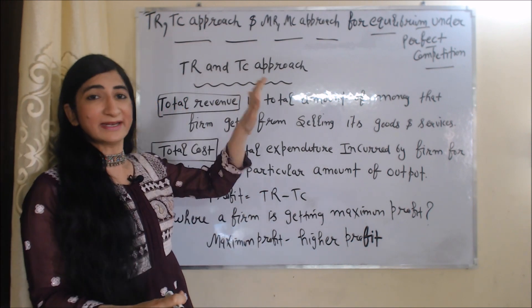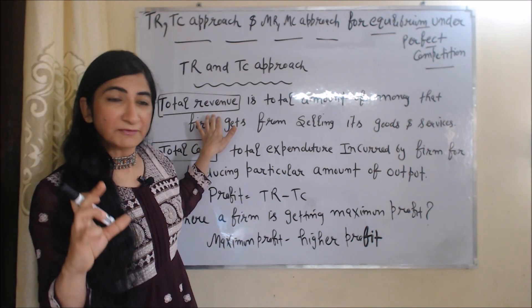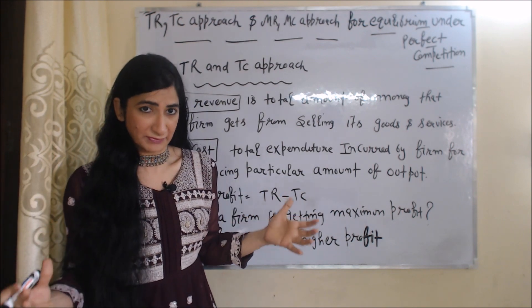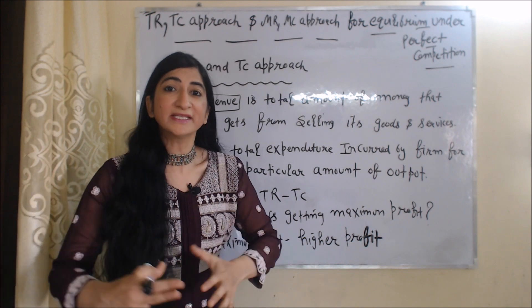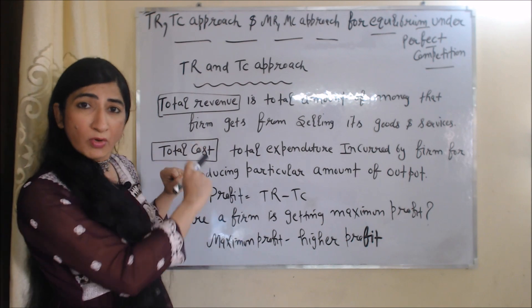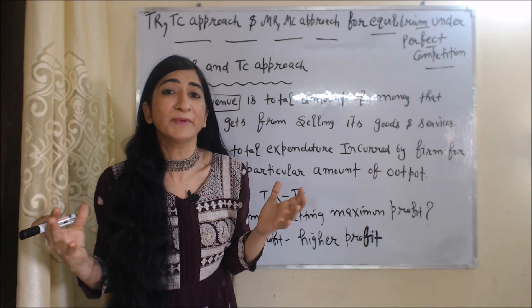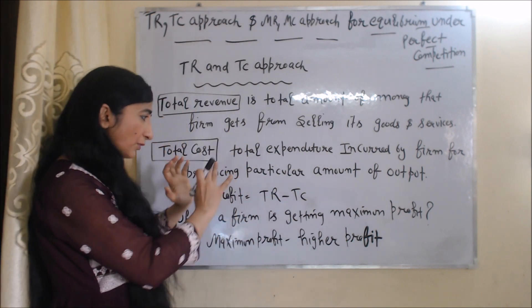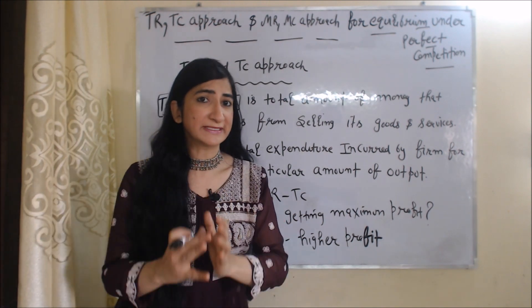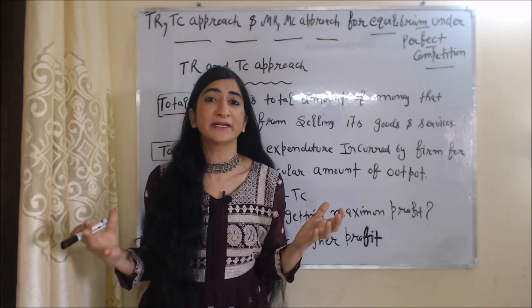Firstly, we are going to talk about TR and TC approach. TR is total revenue — the total amount of money that a firm gets from selling its goods and services. TC is total cost — the total expenditure incurred by a firm for producing a particular amount of output. We can calculate profit by subtracting total cost from total revenue. In this approach, we basically talk about where the firm is getting maximum profit.